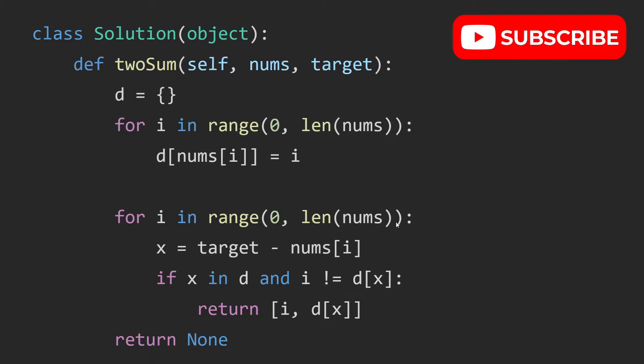So after this for loop, and let's say we didn't return a list yet, then we know for sure that we cannot find two numbers that add up to the target. So we have to return none.